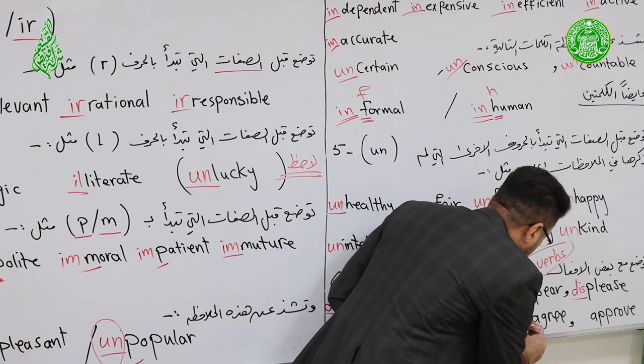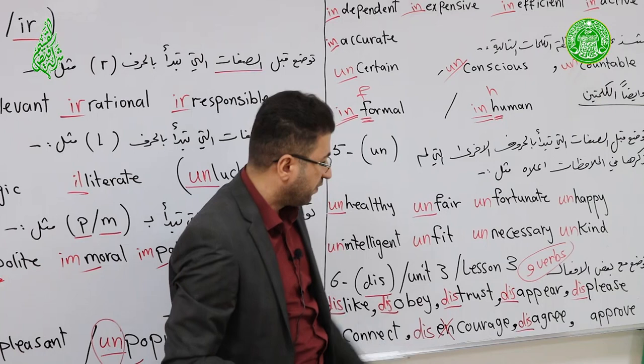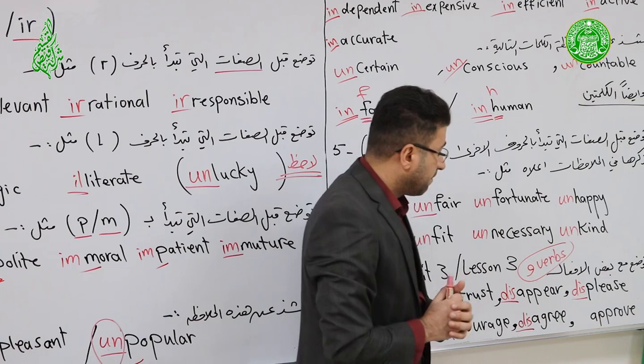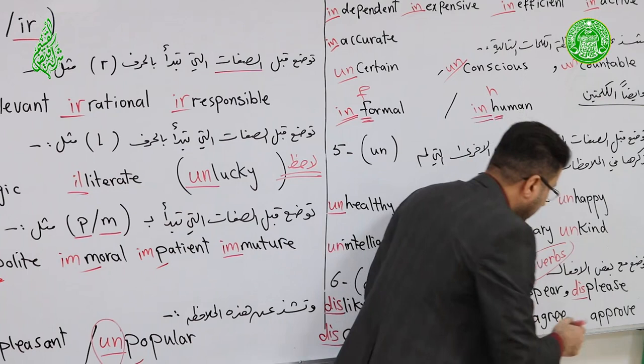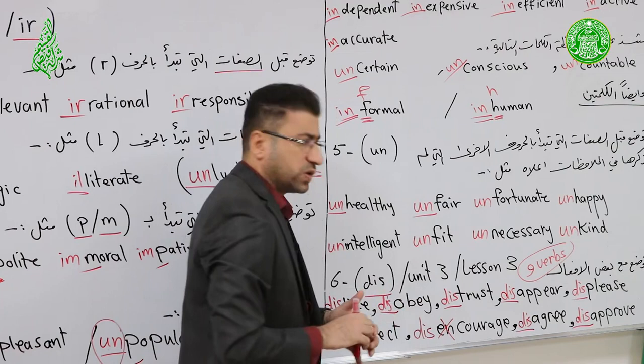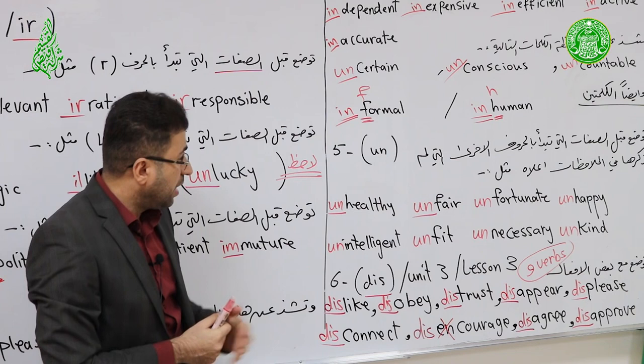Encourage → Discourage (لا يشجع). Agree → Disagree (لا يوافق). Approve → Disapprove (لا يوافق/لا يصادق على). These are the nine verbs for note number six with the prefix DIS.